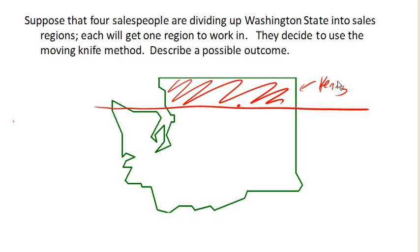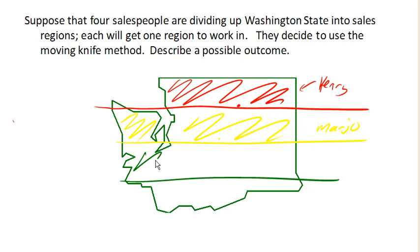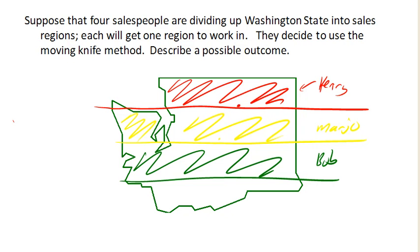Then we keep moving down and again somebody yells 'stop,' and we get a division — all of that goes to the next person who yelled stop, which was Marjo. Then we continue down the line and at some point somebody yells 'stop,' and we get a division and that part goes to Bob. The remaining piece would go to the last player.